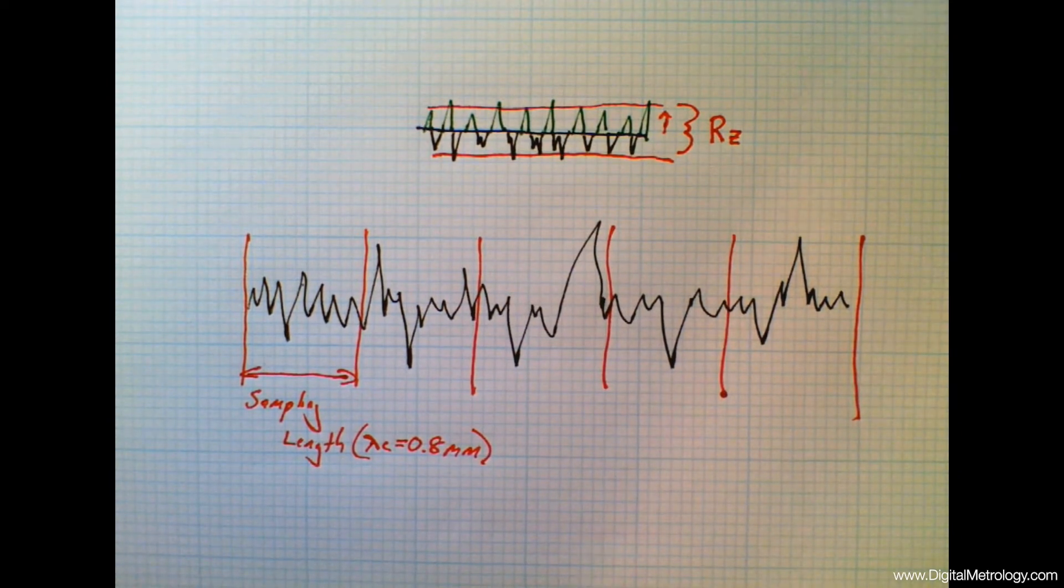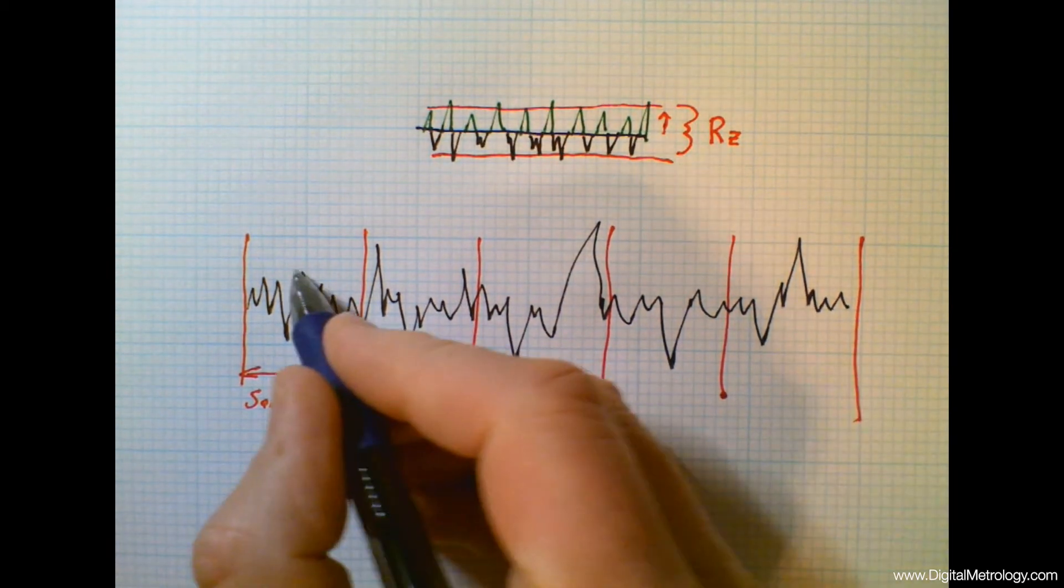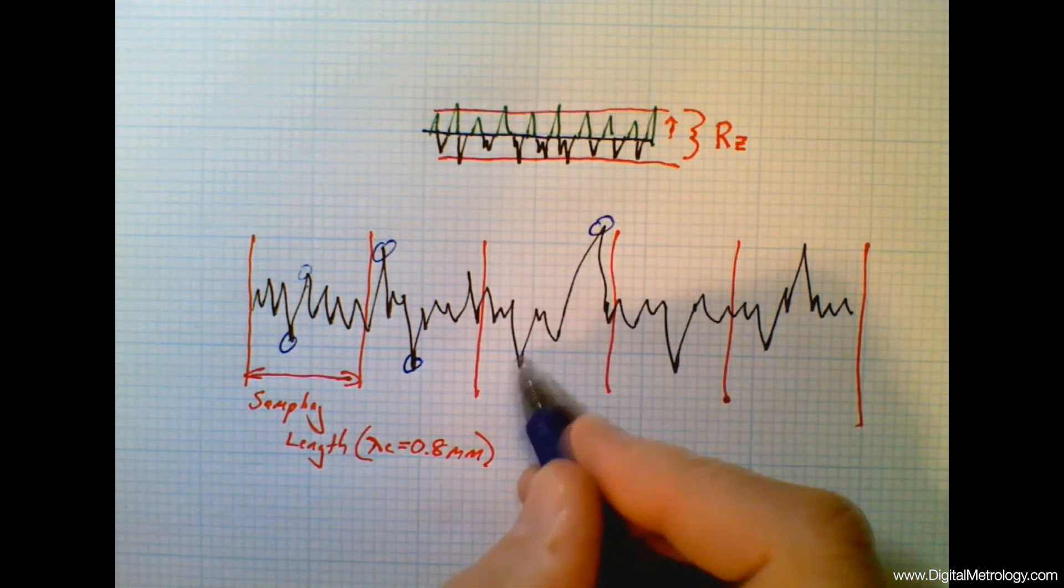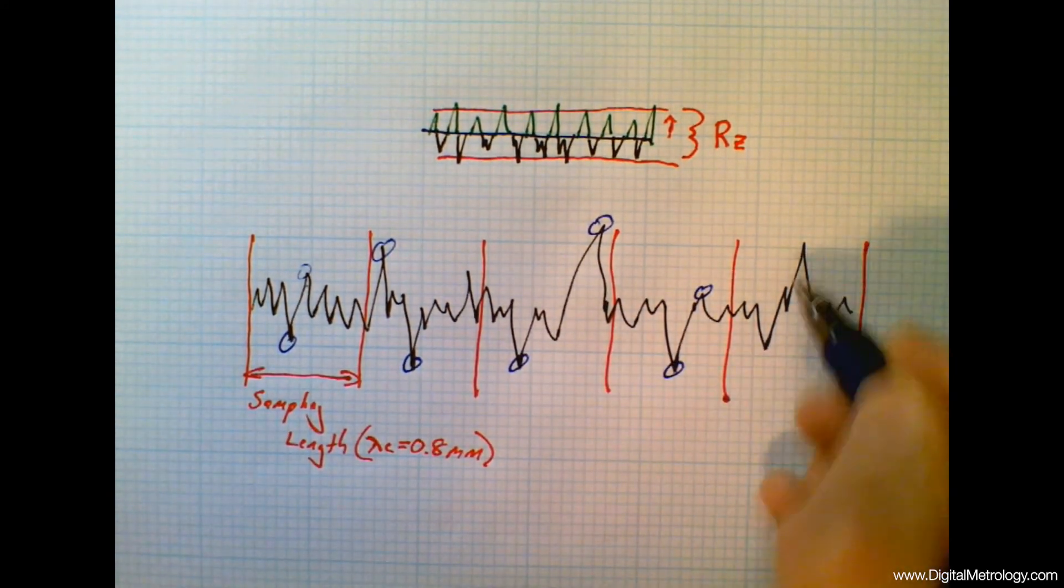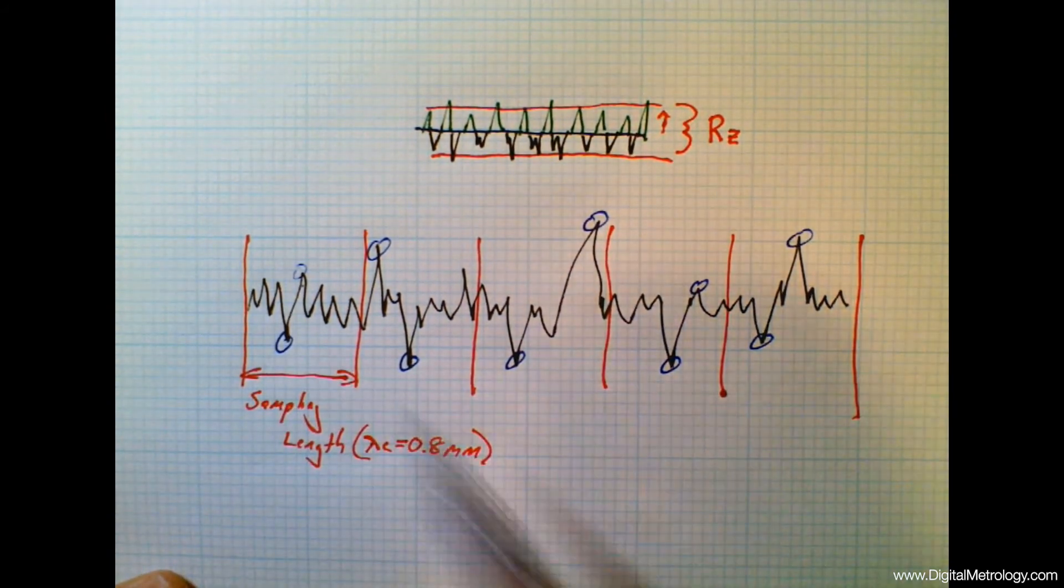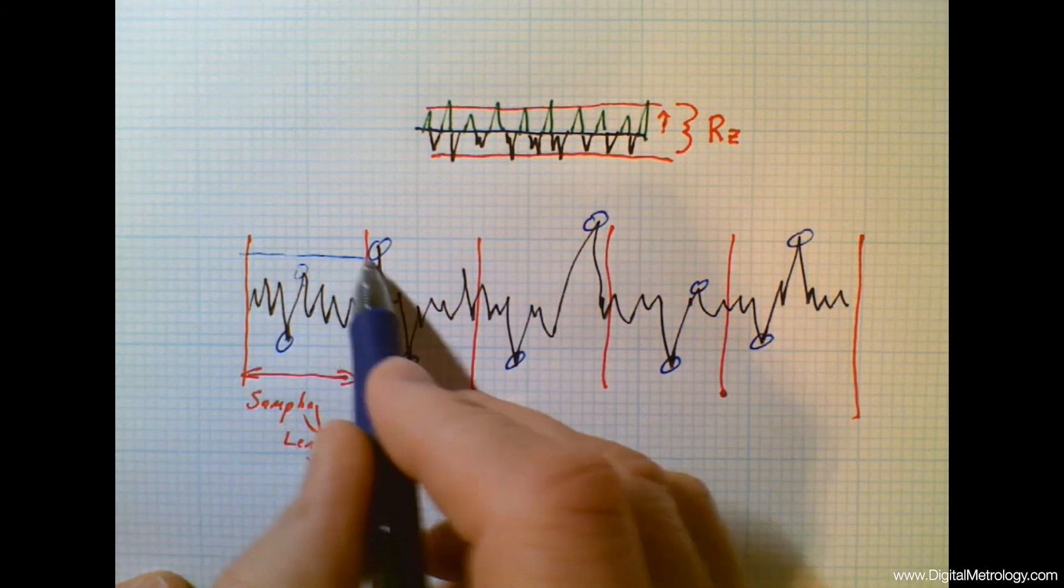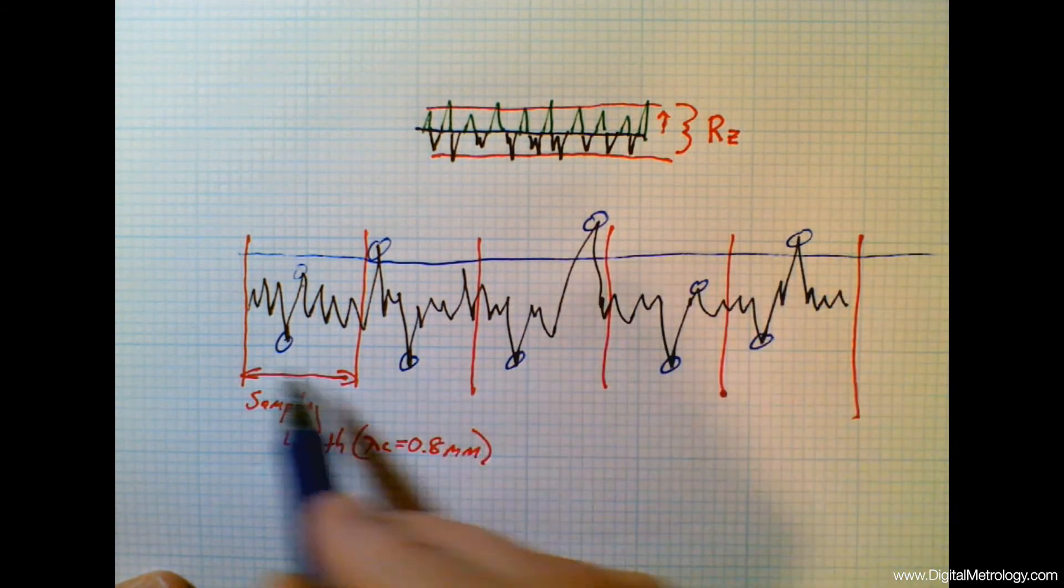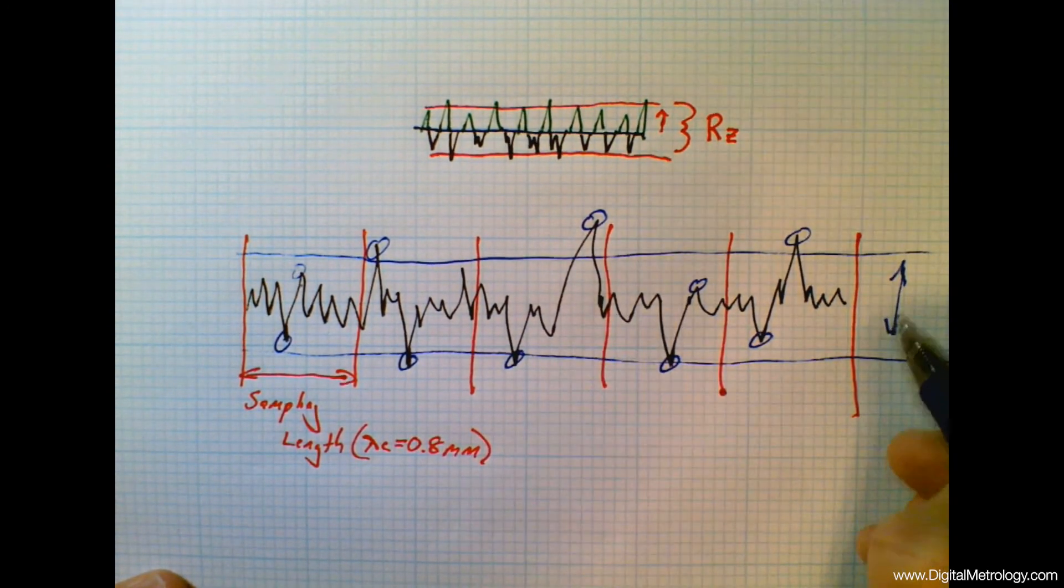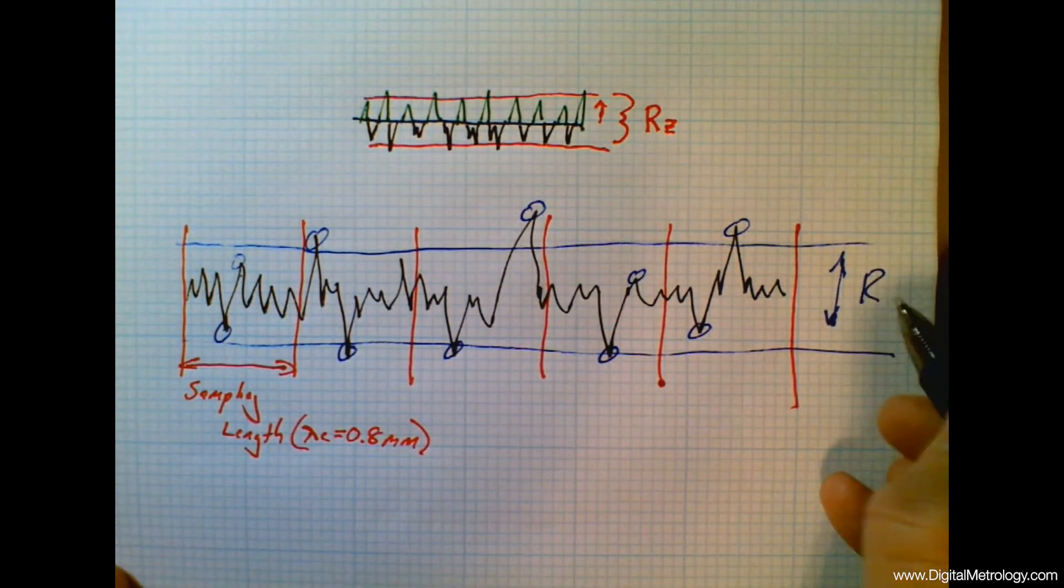So now a typical measurement will be made up of five samples or five sampling lengths. In each one of those we're going to find the highest peak in the deepest valley and that's pretty simple graphically. Highest peak in a deepest valley, and if we average that peak to valley difference or if we average the peaks and we average the valleys we come up with the parameter RZ.